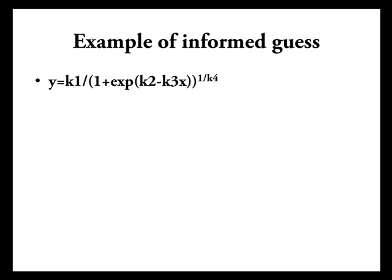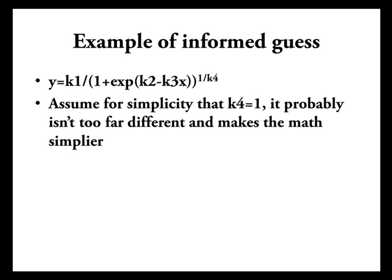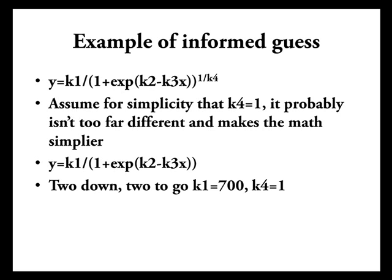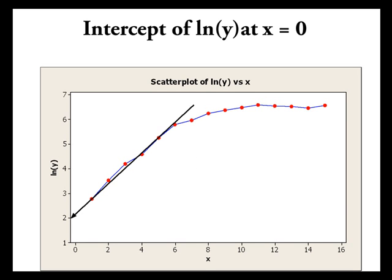Now, let's take an example of an informed guess. Here's the model again. And that 1 over k4 exponent in a denominator really makes things complicated. So, let's assume for simplicity k4 equals 1. And it probably isn't too far different and that makes the math simpler. It's probably not too far different because that would make that denominator term much more powerful if k4 were bigger or smaller than 1. So, now the equation reduces to this. It's quite simple. So, we now have two down and two to go. We've got the k1 as the asymptote 700 and k4 for simplicity as 1.